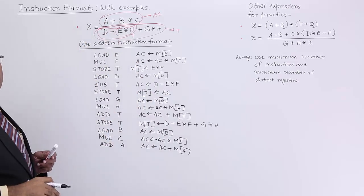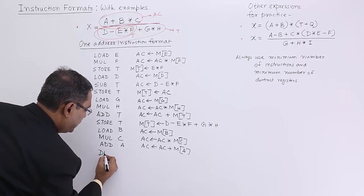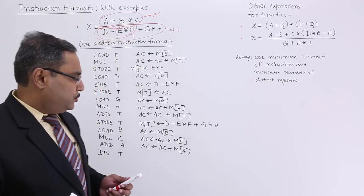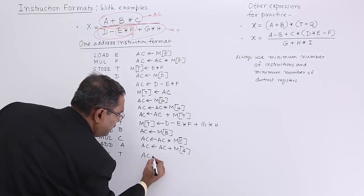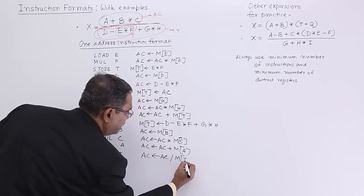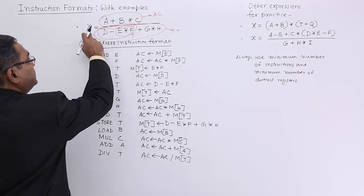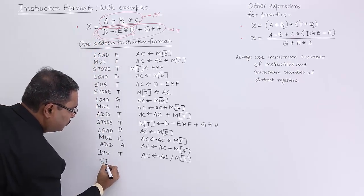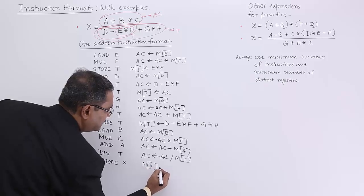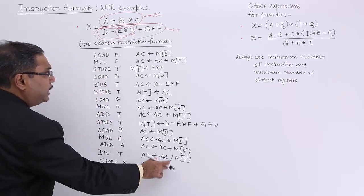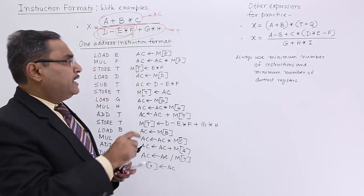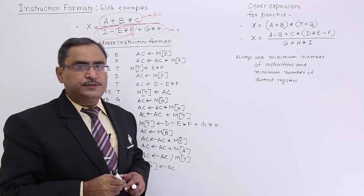Now I should go for DIV t — that is why I started with the denominator. DIV t: the accumulator is equal to accumulator divided by memory content for variable t. But the result should be kept in X, so I shall go for STORE X. The memory content for variable X will get initialized with the accumulator, and the accumulator is containing the full expression value. In this way the same expression is re-expressed in one-address instruction format.